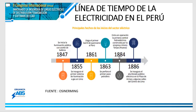En 1884, se construye una central hidroeléctrica de uso privado, de una minera, acá en Anca, Perú. En 1886, se inaugura en la plaza de armas de Lima, en el Paseo Colón, la primera iluminación artificial. Esta es la pequeña línea de tiempo a nivel nacional. El sector eléctrico sabemos a qué sectores sirve.